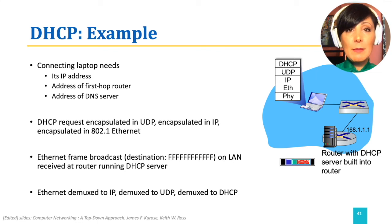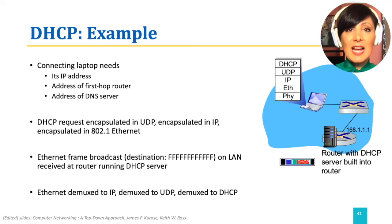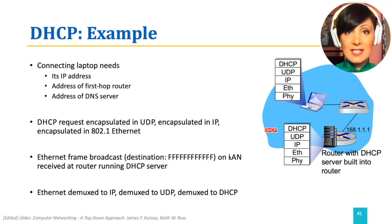The Ethernet frame will be broadcast on the LAN — which we will see the details of in the data link layer discussions — and received at the router running the DHCP server. It will then be demultiplexed up to IP, to UDP, and to DHCP at the server.